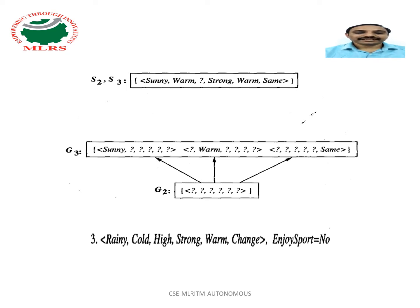Negative training examples play a complementary role of forcing the G boundary to become increasingly specific. Consider the third example, which is a negative example that reveals the G boundary of the version space is overly general. It fails to cover the negative example.